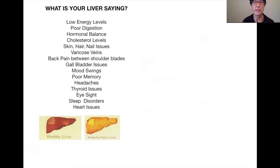Varicose veins, pain between your shoulder blades or in your upper neck, gallbladder issues, even mood swings, being irritable and hangry. Your blood sugar levels have a lot to do with your liver.